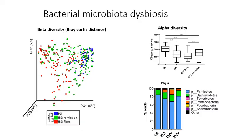The bacterial microbiota composition was in accordance with the literature, with a stronger dysbiosis in IBD patients in flare, a decreased biodiversity, a decreased abundance of Firmicutes, and an increased abundance of Proteobacteria.